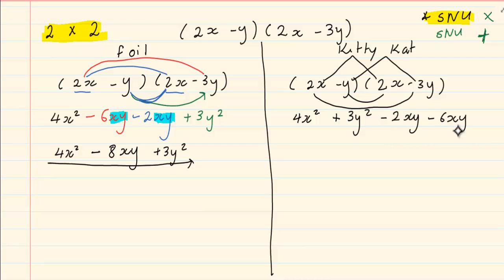Now once we have done the signs, numbers and unknowns of multiplication, we need to look for like terms. And you will see that in the kitty cat, it always ends up being the last two. We are adding and subtracting.